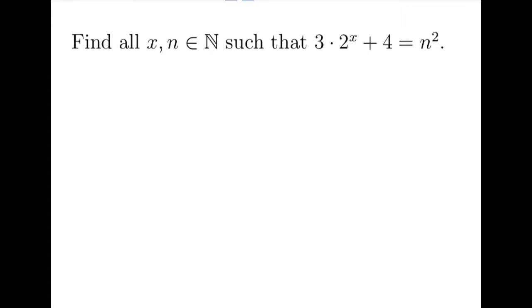So when I first saw this problem, the first thing I would do is move 4 to the other side and factorize using the identity of difference of squares. So we would get n squared minus 4 equals 3 times 2 to the x, and of course we factorize it and we would have n plus 2 times n minus 2 equals 3 times 2 to the x.